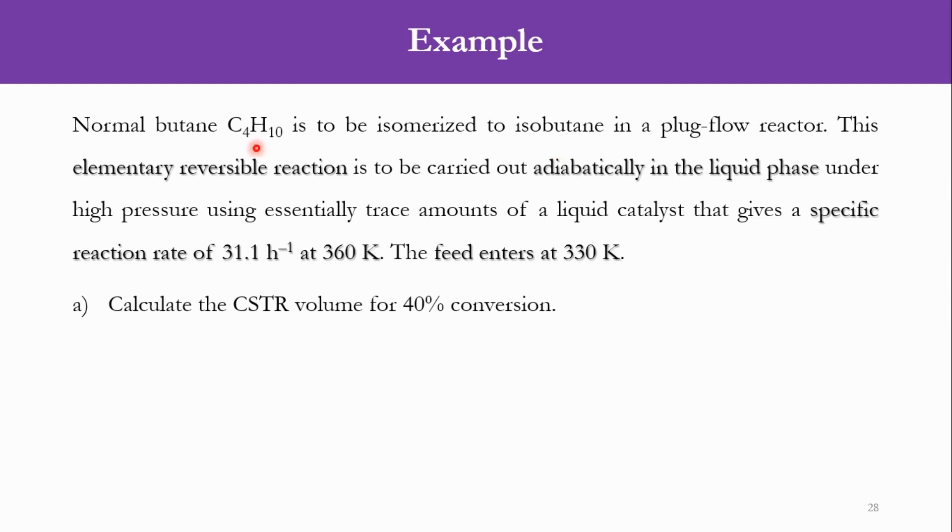This is the example. The statement is that normal butane C4H10 is to be isomerized to isobutane in a plug flow reactor and obviously in a CSTR reactor. This elementary reversible reaction is to be carried out adiabatically in the liquid phase under high pressure using trace amounts of a liquid catalyst that gives a specific reaction rate of 31.1 per hour at 360 Kelvin. It is an adiabatic system, meaning no heat transfer with the environment, but within the system there is a change in temperature. Obviously it will not remain an isothermal problem; it will be a non-isothermal statement. It is an elementary reaction, which means that the components in the rate equation will be the same as that of the stoichiometric coefficient in the equation.